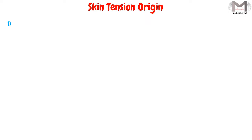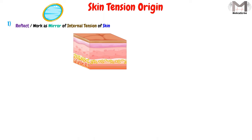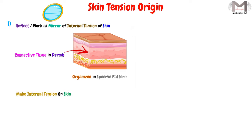The first thing is that the skin tension lines reflect, or work as a mirror to, the internal tension of the skin. As you know, there is connective tissue in the dermis under the skin surface. This connective tissue is organized and aligned in a specific pattern, and this alignment creates an internal tension on the skin. As a result, this internal tension affects the external tension, or the tension lines.